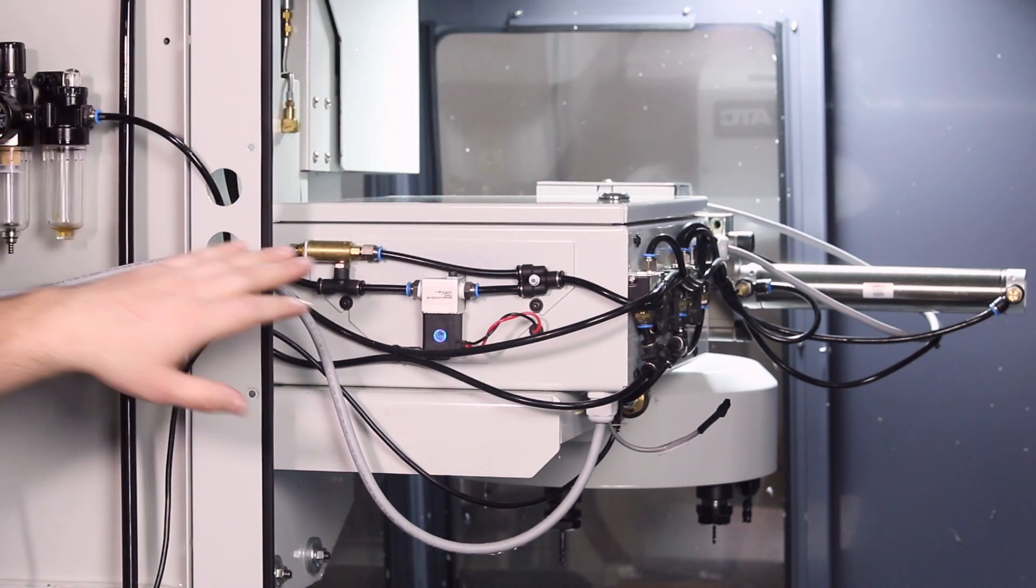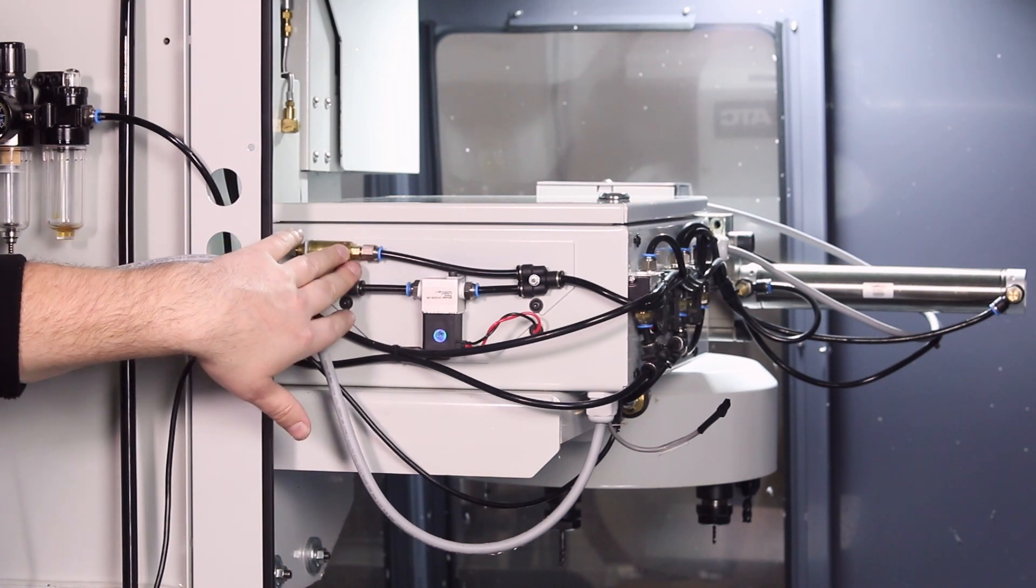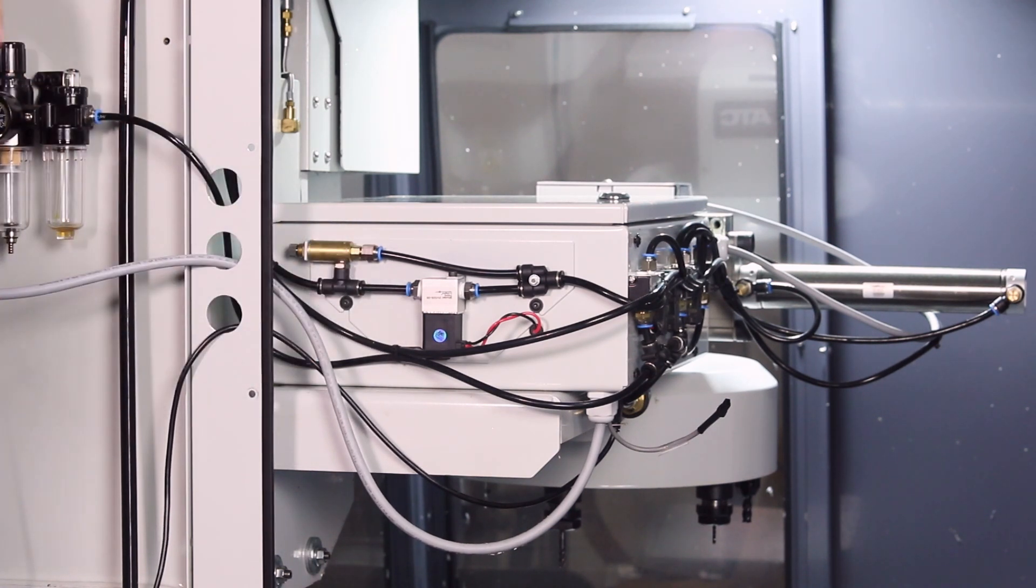Once the spindle orients the tool to the correct direction, the regulator will then send air to these airlines to hold the spindle in that position as it has greater torque than the motor.